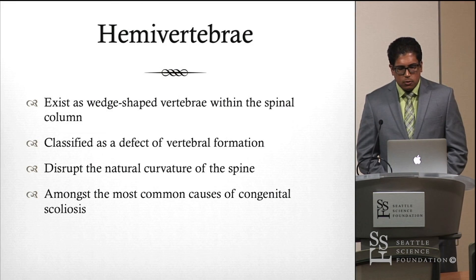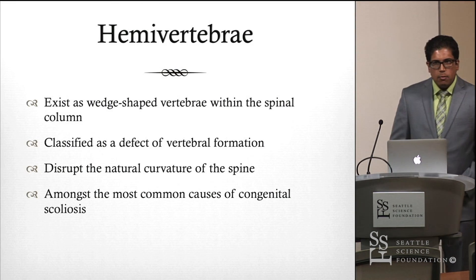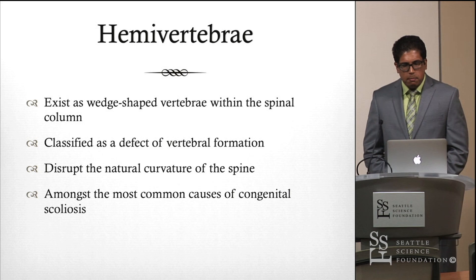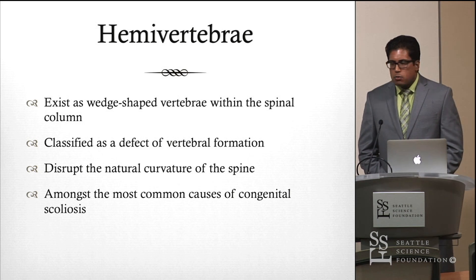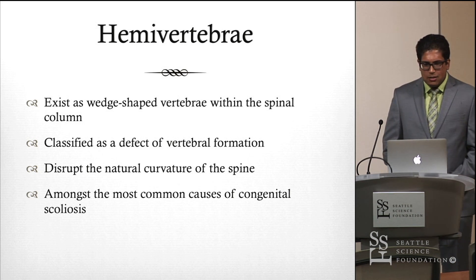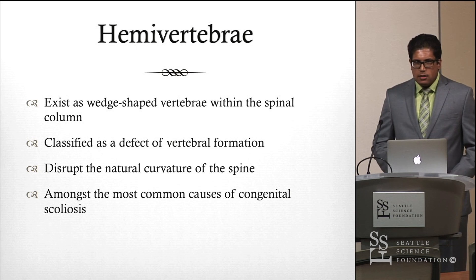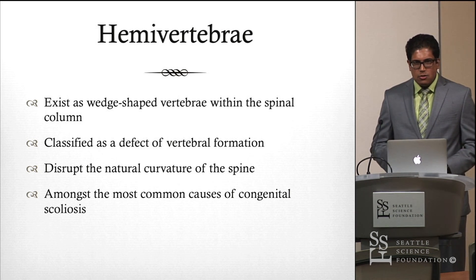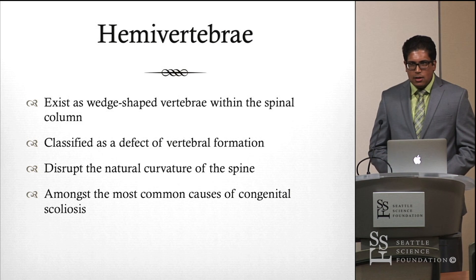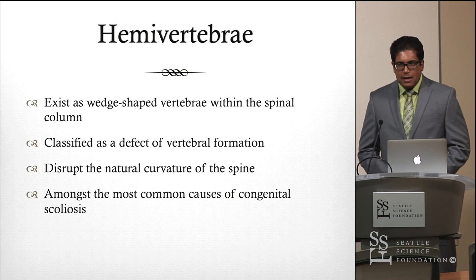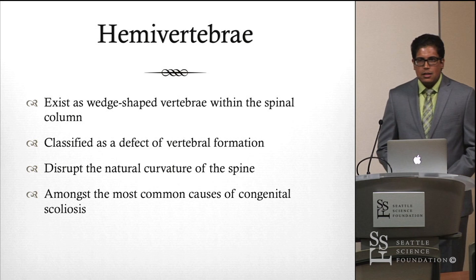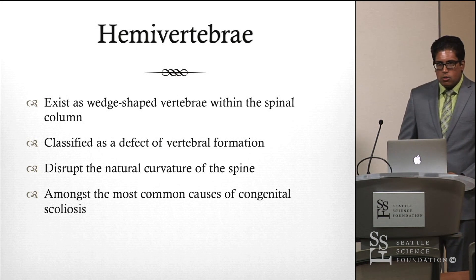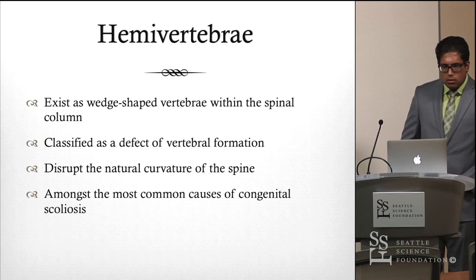Hemivertebra is a developmental disorder of the vertebral column. The best way to describe it is that it exists as a wedge between the different parts of the vertebral column. It can occur in the cervical spine, the thoracic spine, or the lumbar spine, and it is most commonly found in the thoracolumbar spine. It is classified as a defect of vertebral formation, and its etiology lies in the embryology or development of the vertebral column.